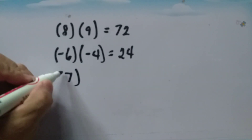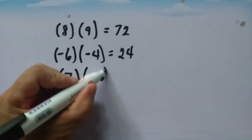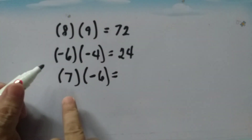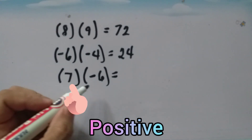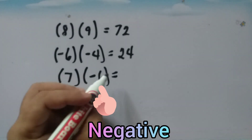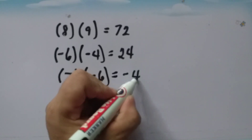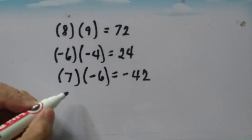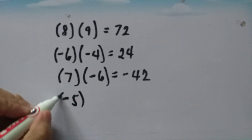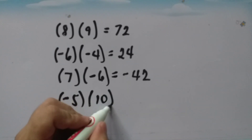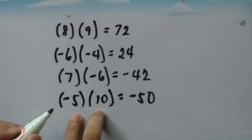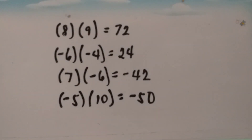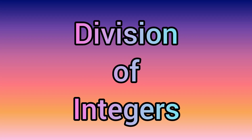Now, if we have seven times negative six, we have two unlike-sign numbers. When two numbers have different signs, the product is negative, so the answer is negative 42. Another example: negative five times positive ten gives a product of negative 50, because we again have two numbers with different signs. We now move on to division of integers.